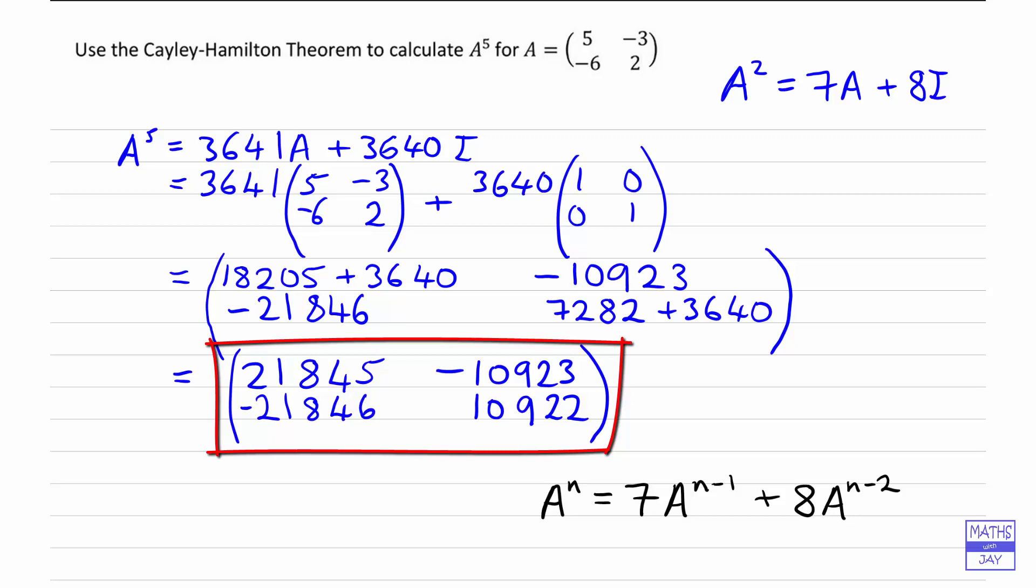So that's really generalizing. In this particular case, we could have worked out A⁵ as 7 times A⁴ plus 8 times A³. And we could have worked out A³ and then gone on and worked out A⁴. We didn't actually choose to do it that way. But if you'd like to have a go, hopefully you'll get the same final answer for A to the power of 5.